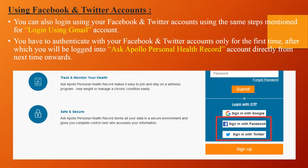Using Facebook and Twitter accounts: You can also login using your Facebook and Twitter accounts using the same steps mentioned for login using your Gmail account. You have to authenticate with your Facebook and Twitter accounts only for the first time, after which you will be logged in to your Ask Apollo Personal Health Record account directly from next time onwards.